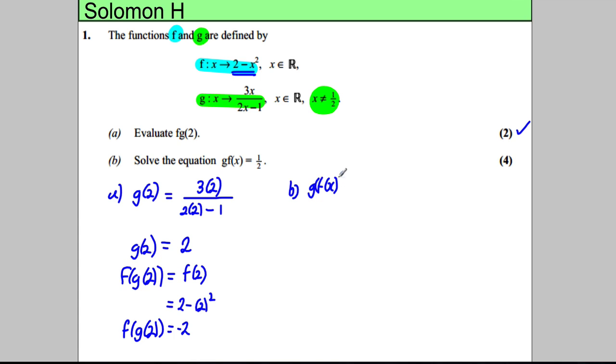So g of f of x—let's work that out first. We have 3 times, and we're going to put in 2 subtract x squared, divided by 2 multiplied by 2 subtract x squared take away 1. We're putting the function f, which is this here, into the function g everywhere we see x.